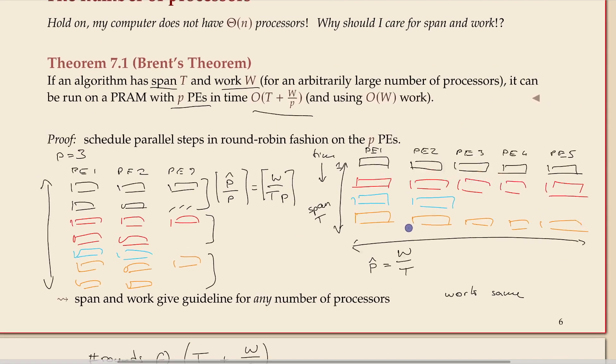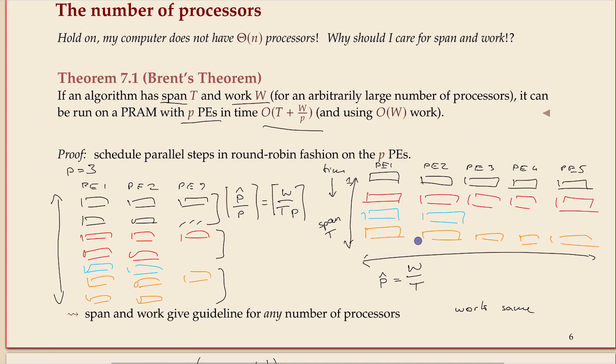But the idea from an algorithmic point of view is very simple. If you have an algorithm that runs on many processing elements, but you know the span and work that it needs, you can calculate how much the same algorithm would need if you run it on a PRAM with a smaller given number of processors. The algorithm would just be scheduled round-robin, assigned to the next free processor whenever you need another time step done.